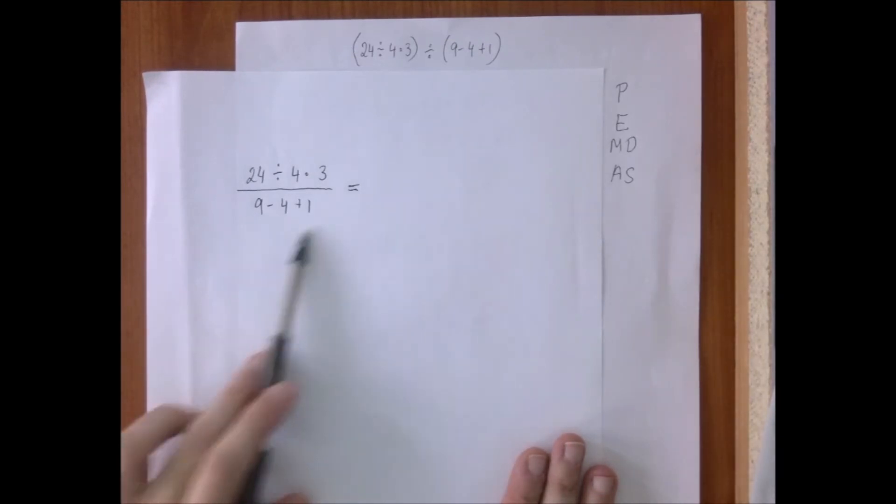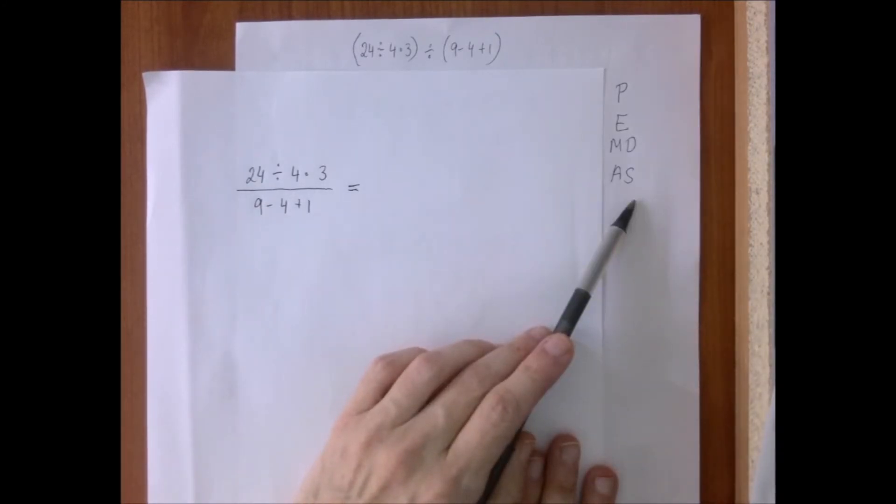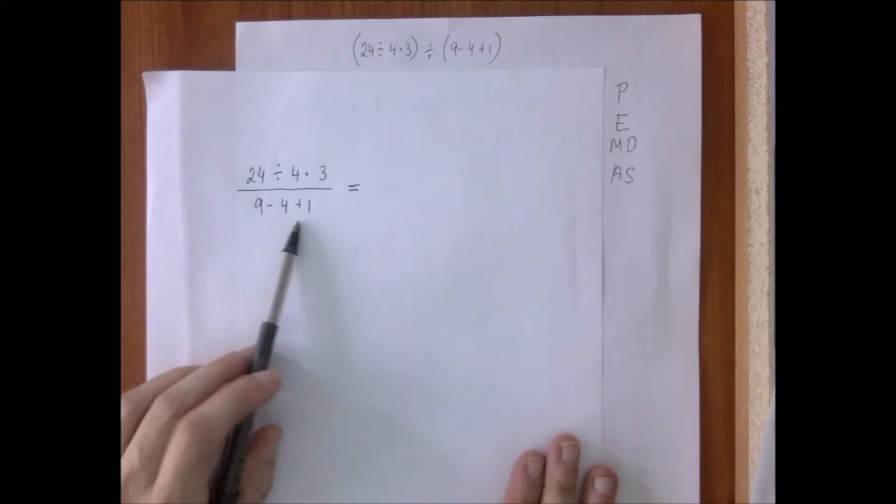Very similarly, the situation below the division bar is analogous, but only it's with addition and subtraction. It is not true that addition comes before subtraction, we have to go left to right.